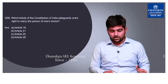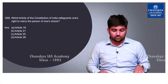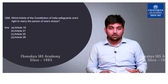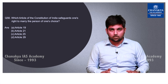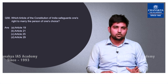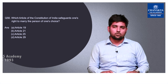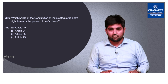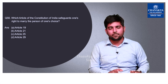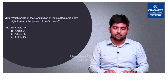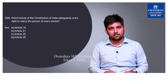Question number 56 asks which article of the constitution safeguards one's right to marry the person of one's choice. The correct option is B — Article 21. This observation was made by the Supreme Court in the Hadiya case, which was in the news over the past 3 to 4 years. Article 21, the right to life, has a broad purview with many implicit provisions, and a number of rights have been recognized under it. The correct answer is B — Article 21.